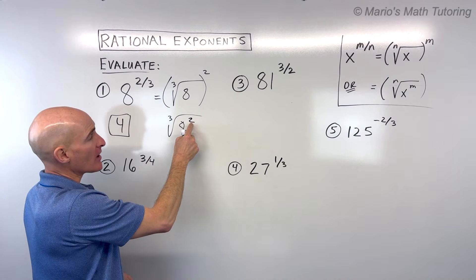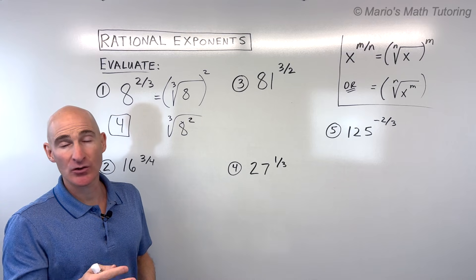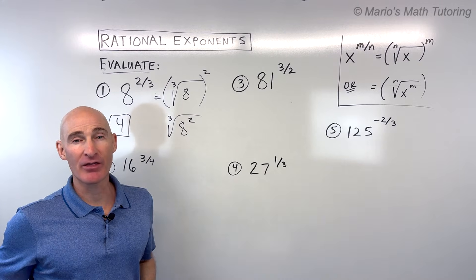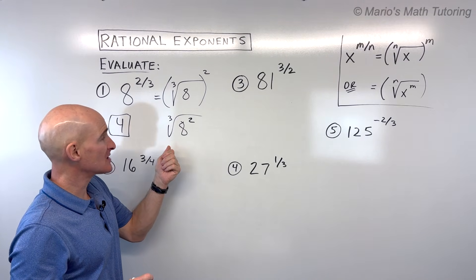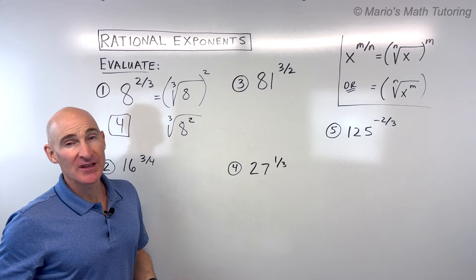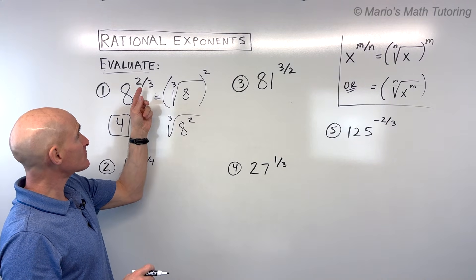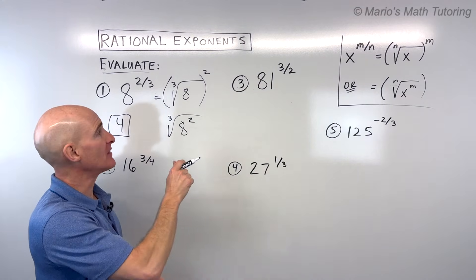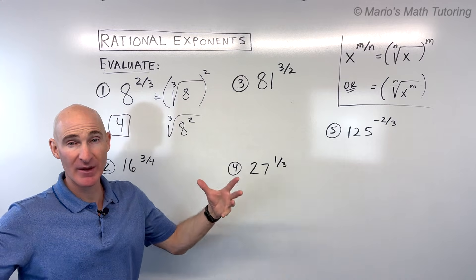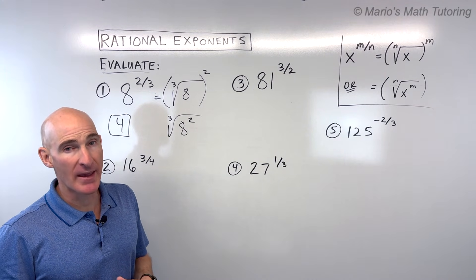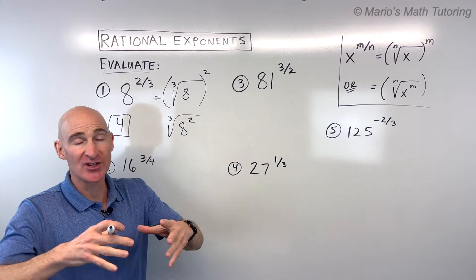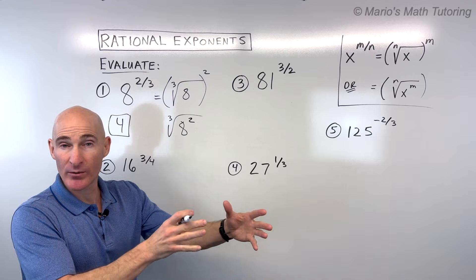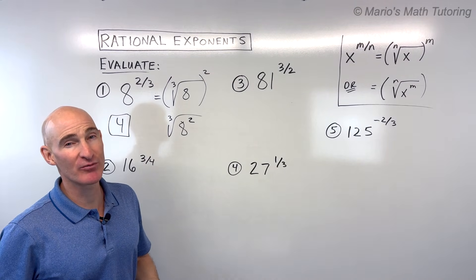Over here, 8 squared is 64. The cube root of 64 — what number times itself three times equals 64 — is also 4. My preference is to take the root first because that makes the number smaller, then raise it to the power. Otherwise, when you raise it to the power first you get a large number and it's then difficult to take the root.